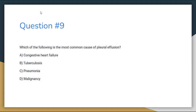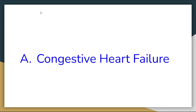Number 9. Which of the following is the most common cause of pleural effusion? Letter A: Congestive heart failure. Letter B: Tuberculosis. Letter C: Pneumonia. Or letter D: Malignancy. The correct answer for number 9 is letter A, Congestive heart failure.